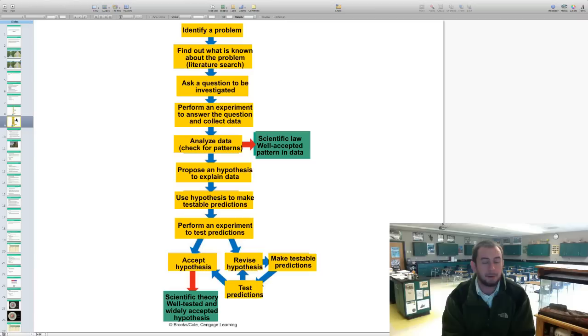This is just a pictorial format or an image of how this whole thing works out. Identifying a problem. Find out what's known. Do some searching, some literature searching. Ask a question. Perform an experiment. Collect data. Analyze the data. If there's a pattern, it's well accepted, it becomes either a law or a theory, or mostly a law if it's accepted over and over again. Propose a hypothesis. Explain the data. Hypothesize. Perform an experiment. Extend a hypothesis. Then it becomes a theory if it's well tested and widely accepted. And then reviewing and testing, making more predictions.